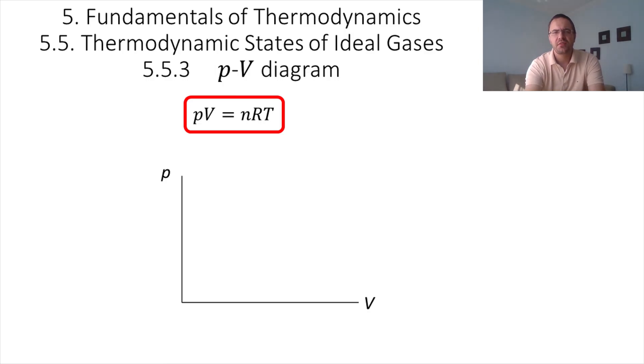Now, finally, we discuss a type of diagram that we will use often in thermodynamics. Those are called PV diagrams, and they simply represent the pressure as a function of volume. So for an ideal gas, we know the function that gives the pressure as a function of volume. It is P is equal to nRT over V.